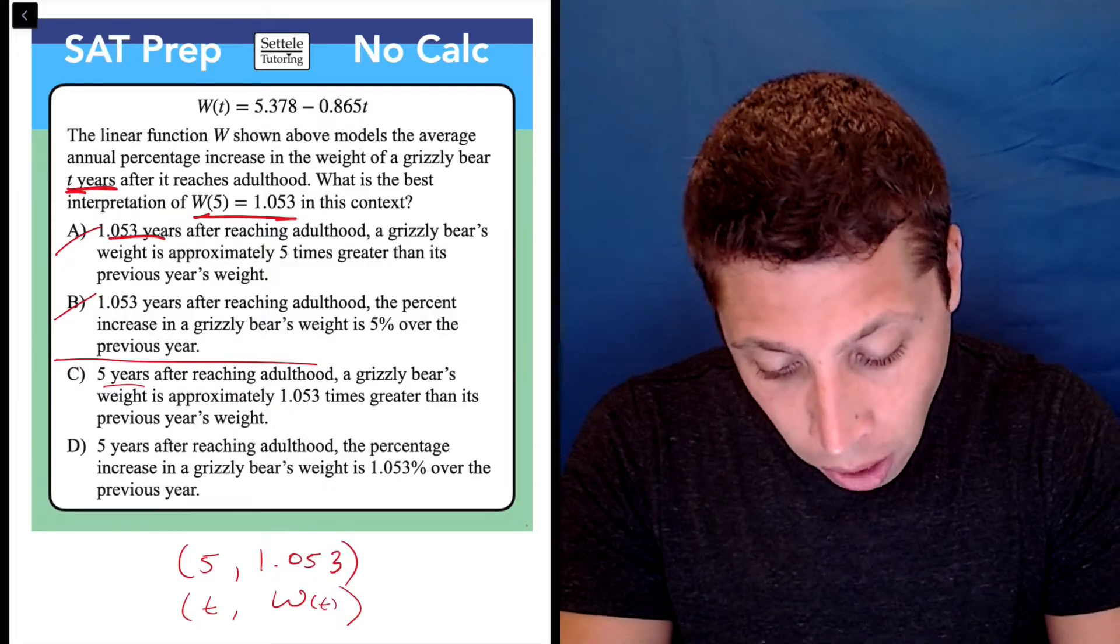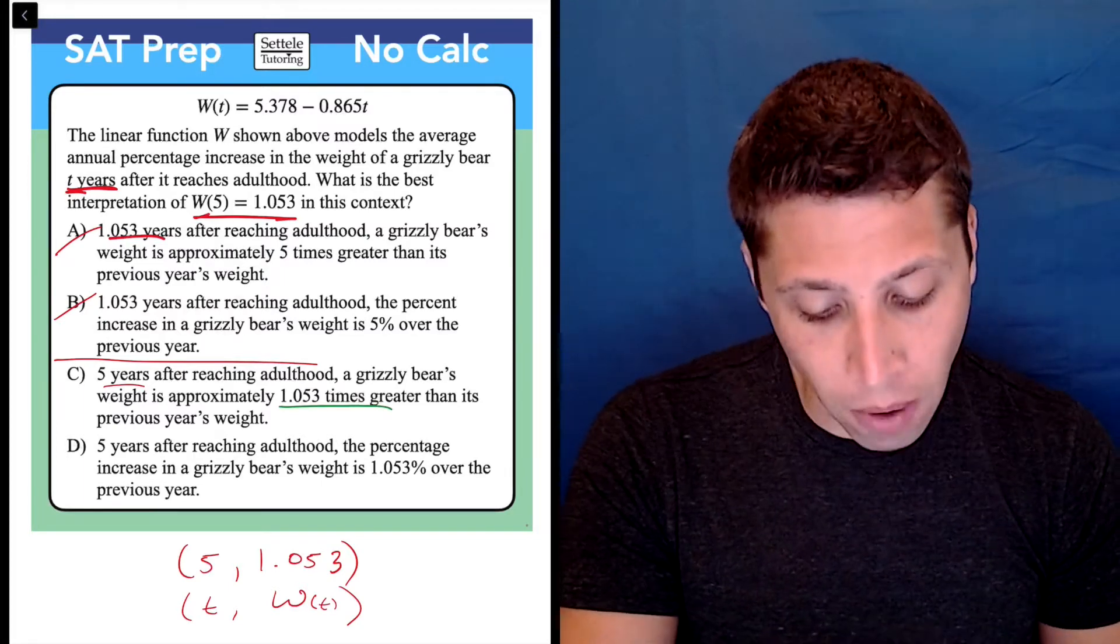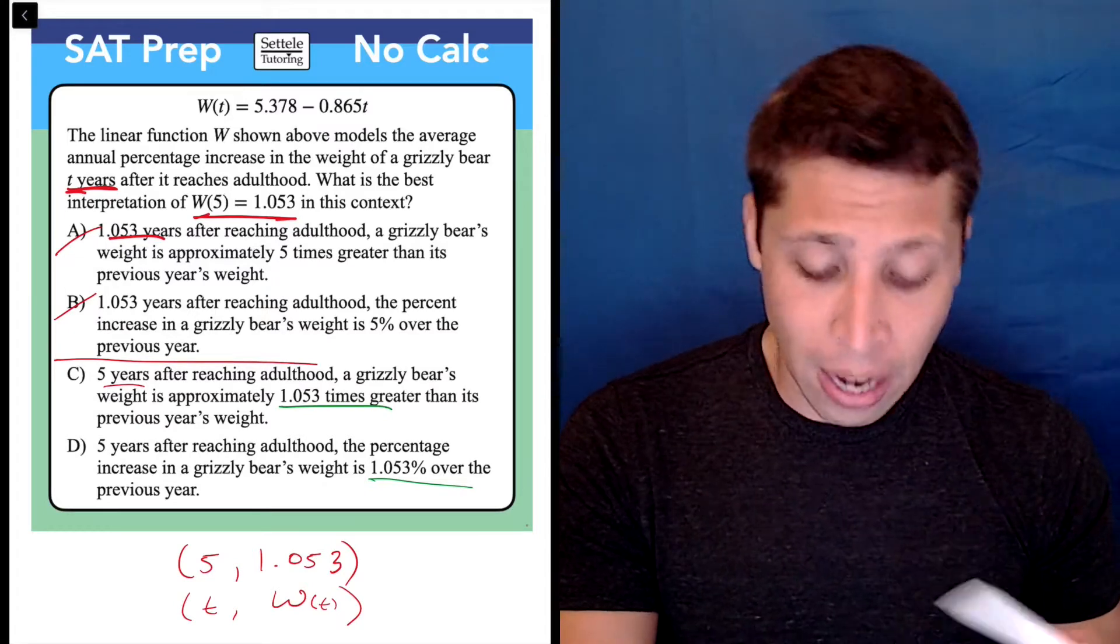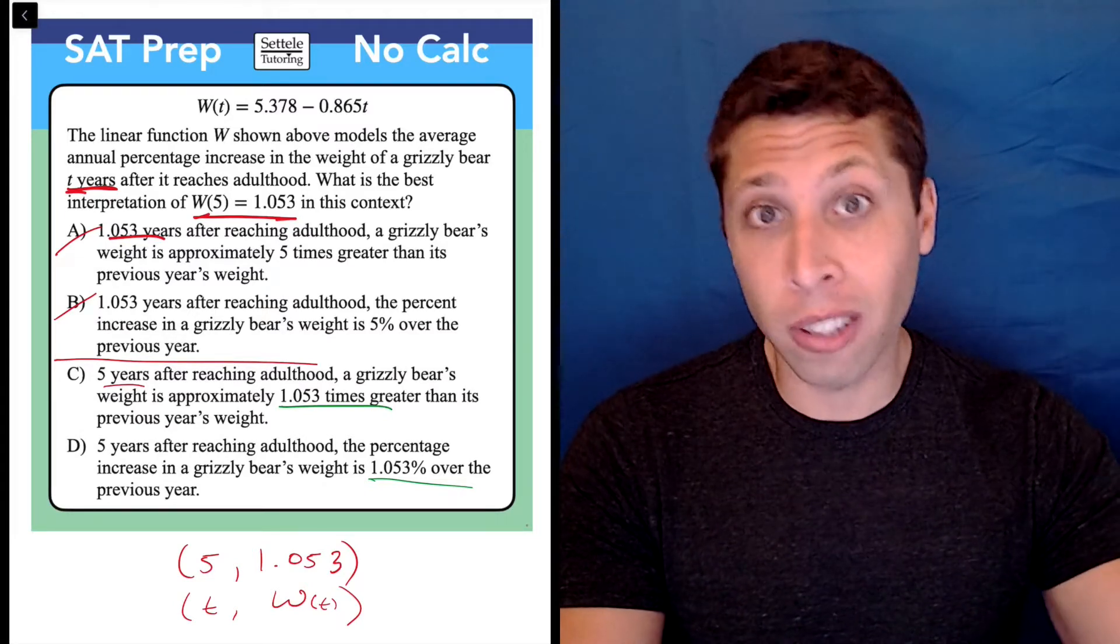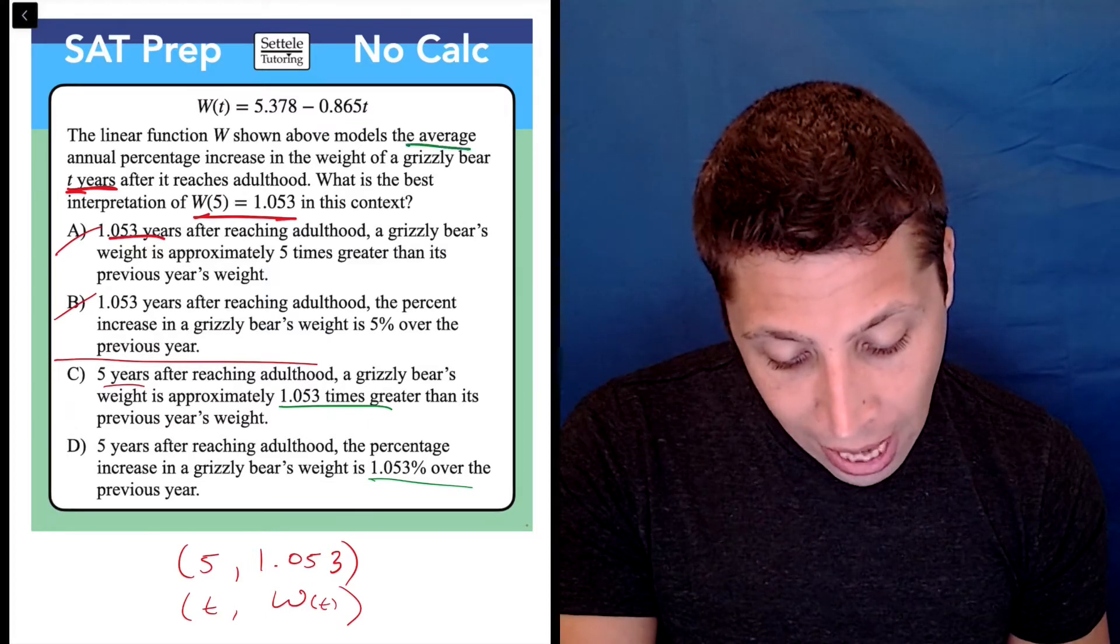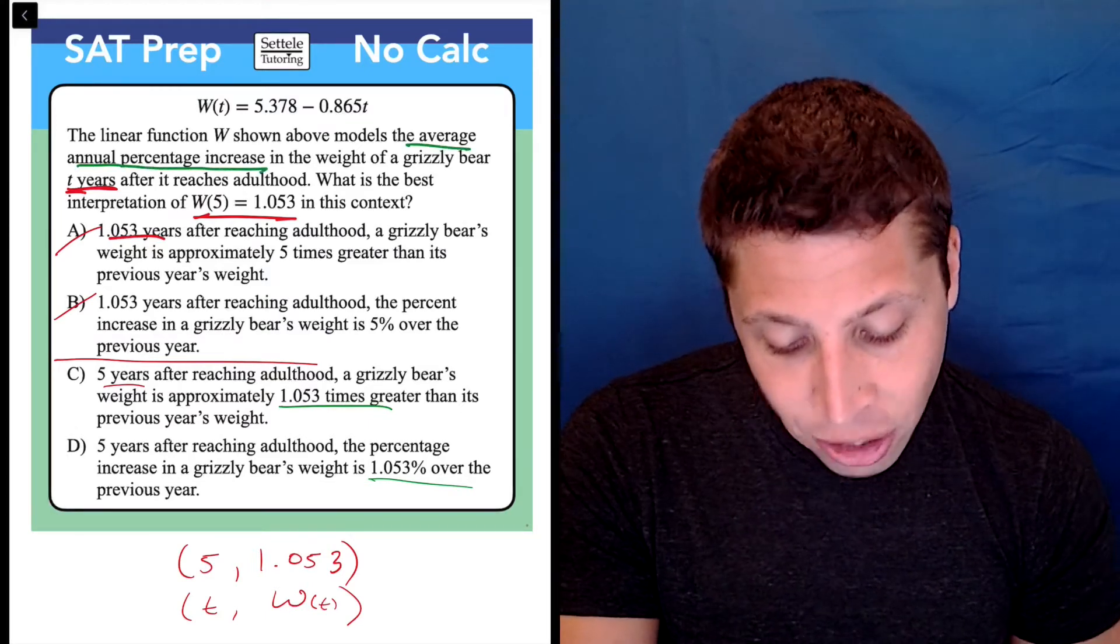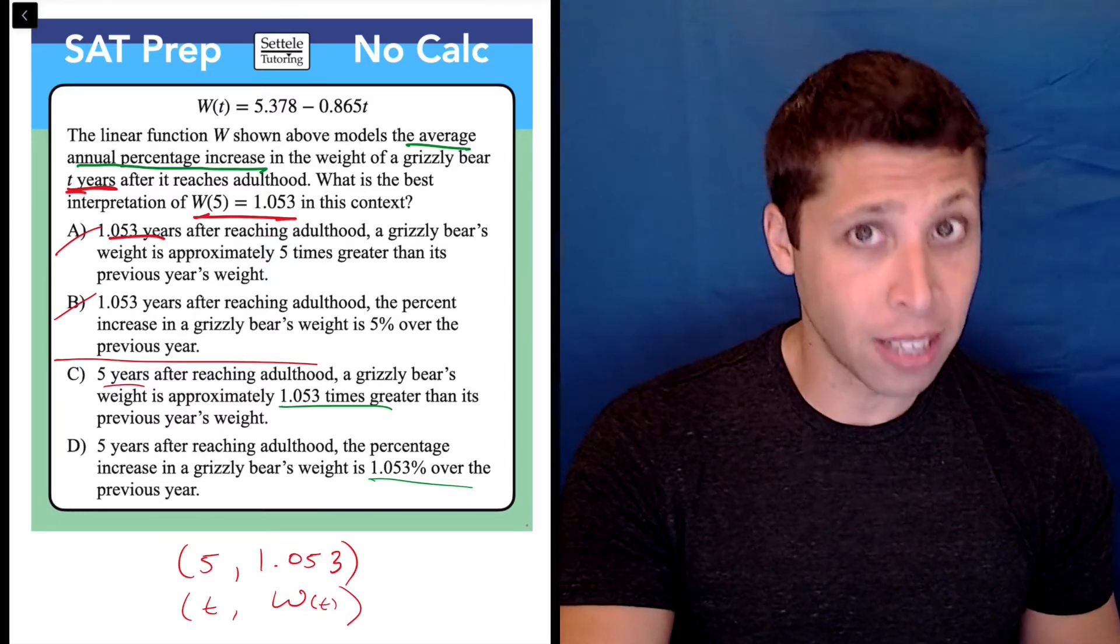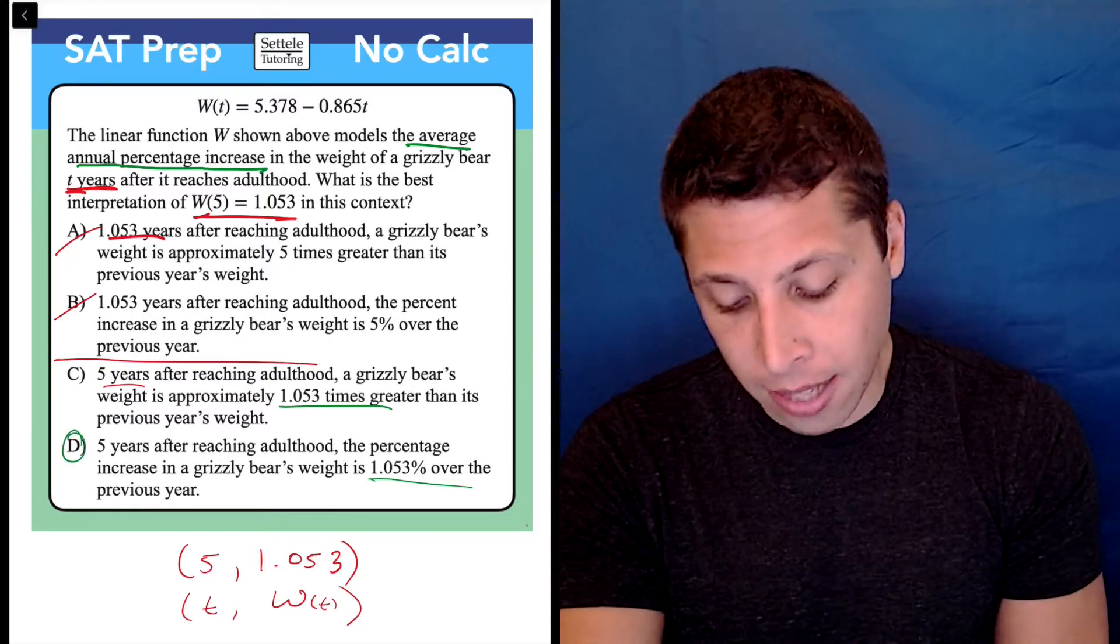Now, again, go back to the passage. Look for the difference in the passage. They're talking about W showing the average annual percentage increase in the weight of a grizzly bear. So the fact that percentage is there makes me really think that D is going to be the answer.